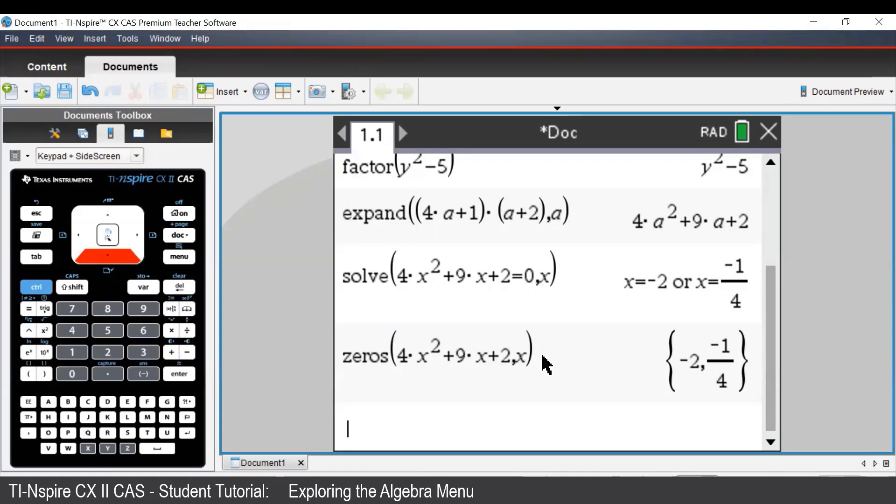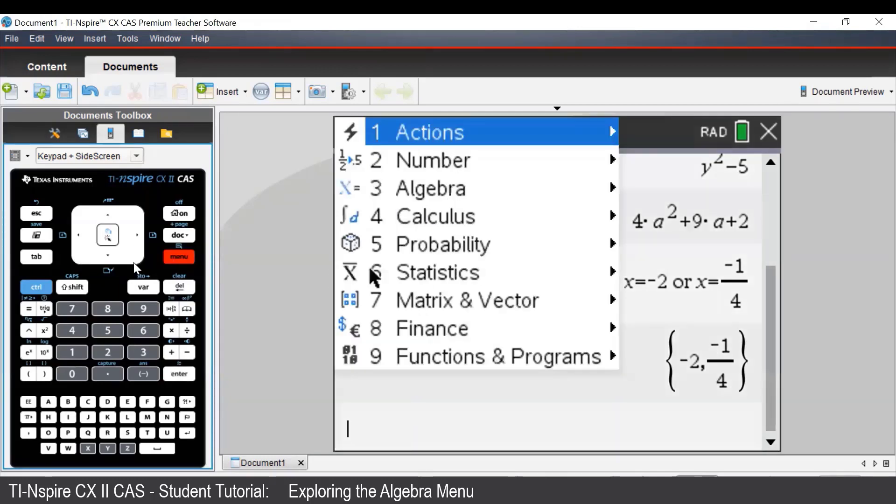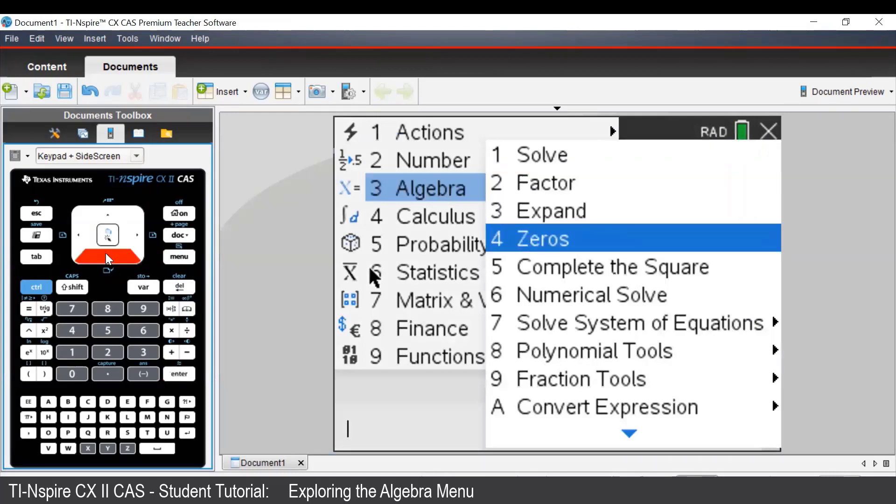To factorize by completing the square using the TI-Inspire, we press menu and then go to algebra and select complete the square.